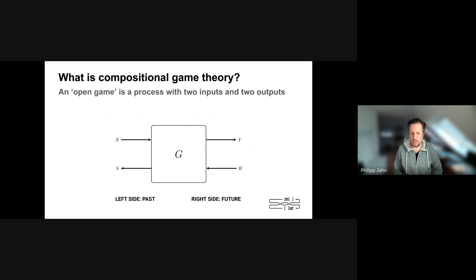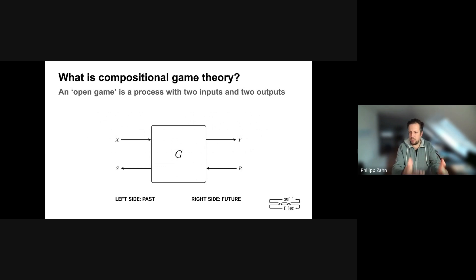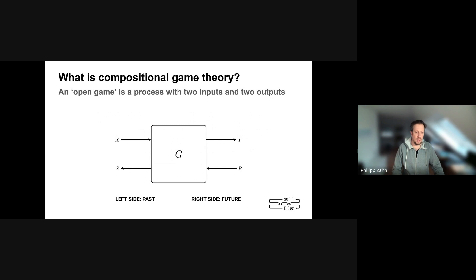Underlying is an atomic unit, depicted here in this diagram. It's basically a bidirectional process. On the left-hand side is the past, on the right is the future. There's some information coming from the past — basically X. Then you output some information into the environment — this is Y. And you get a result back R from the future, and possibly also send information back into the past.